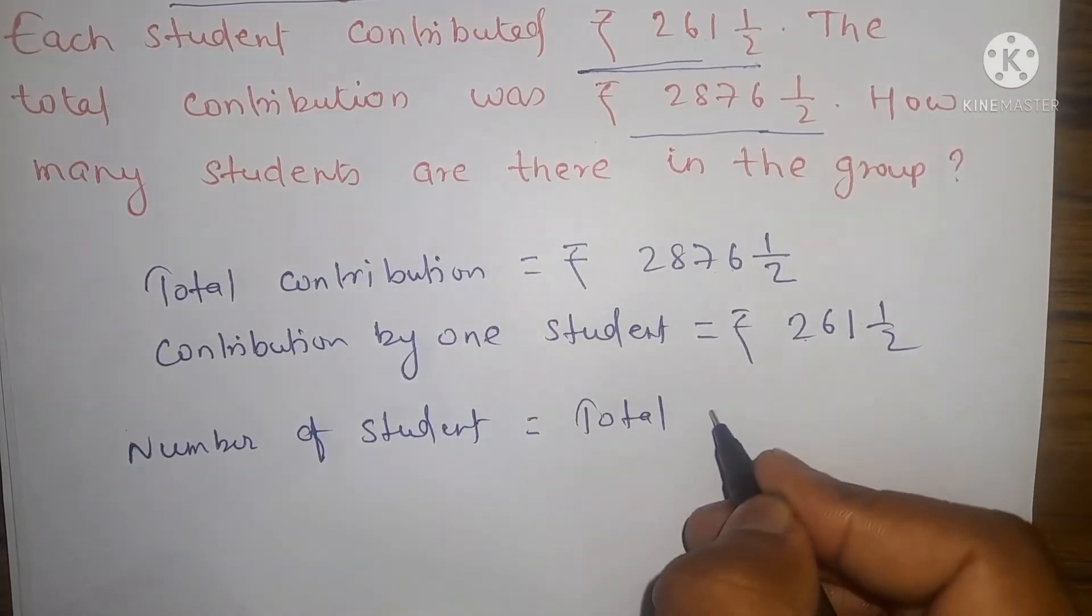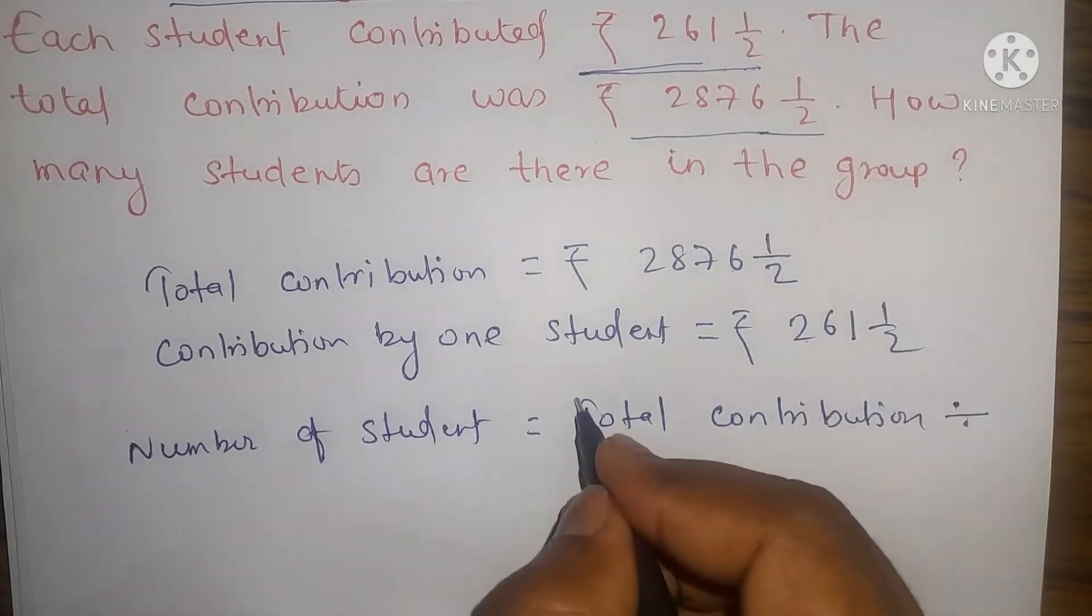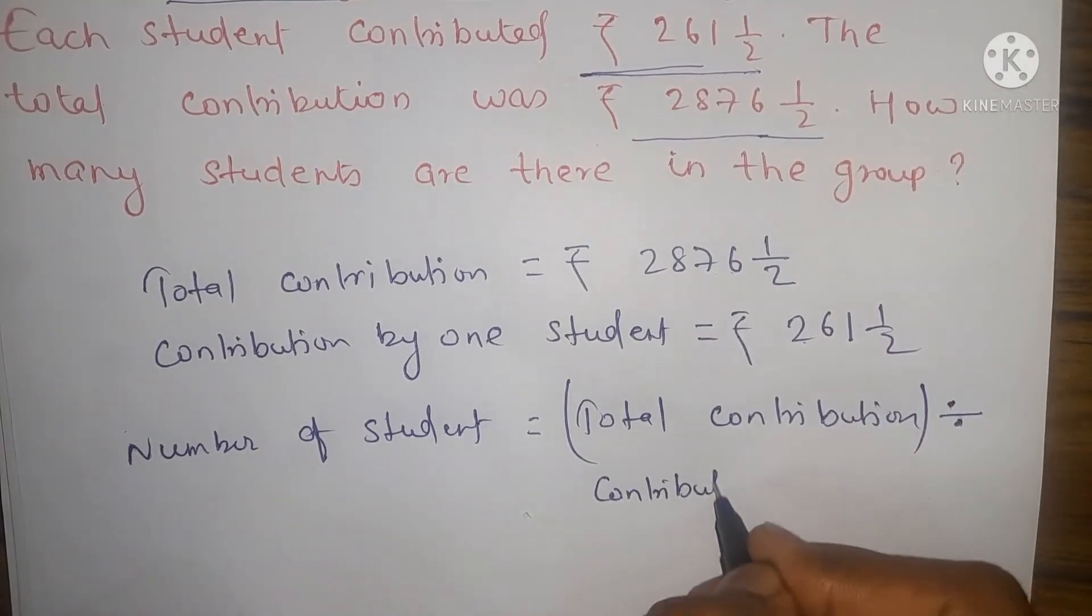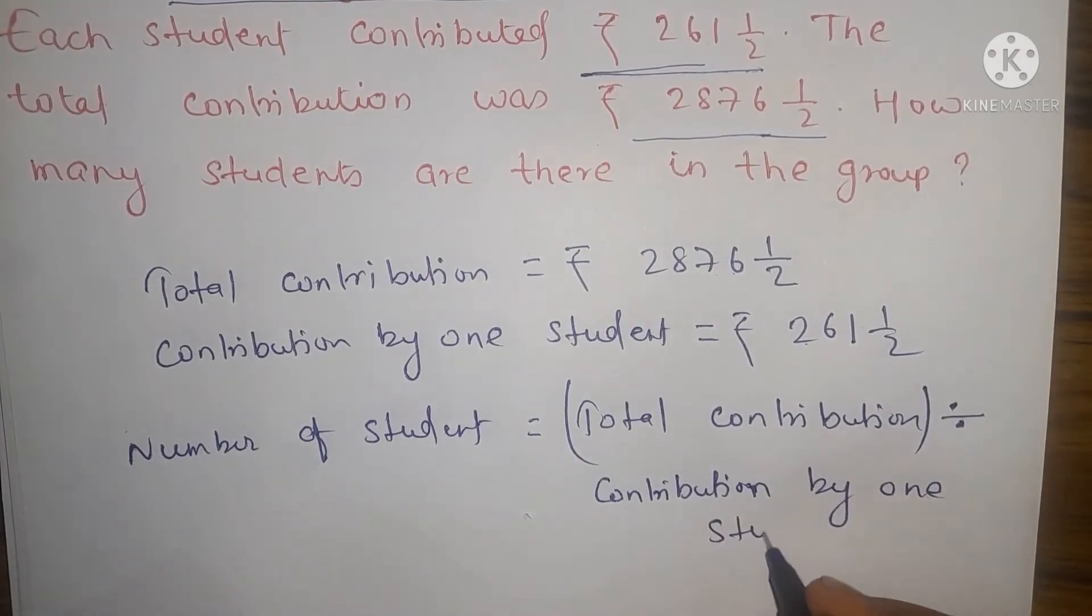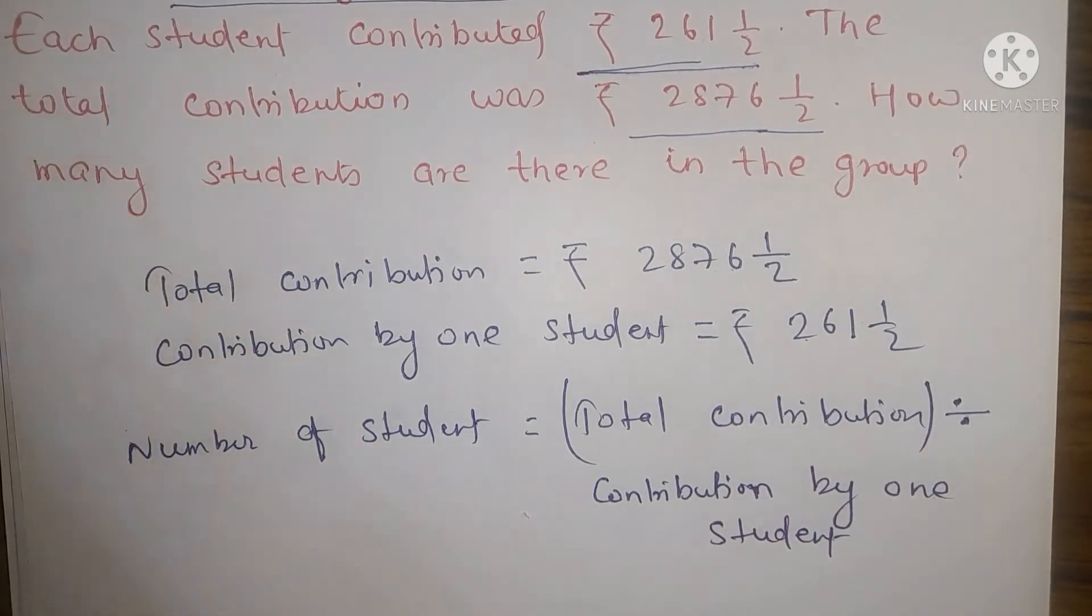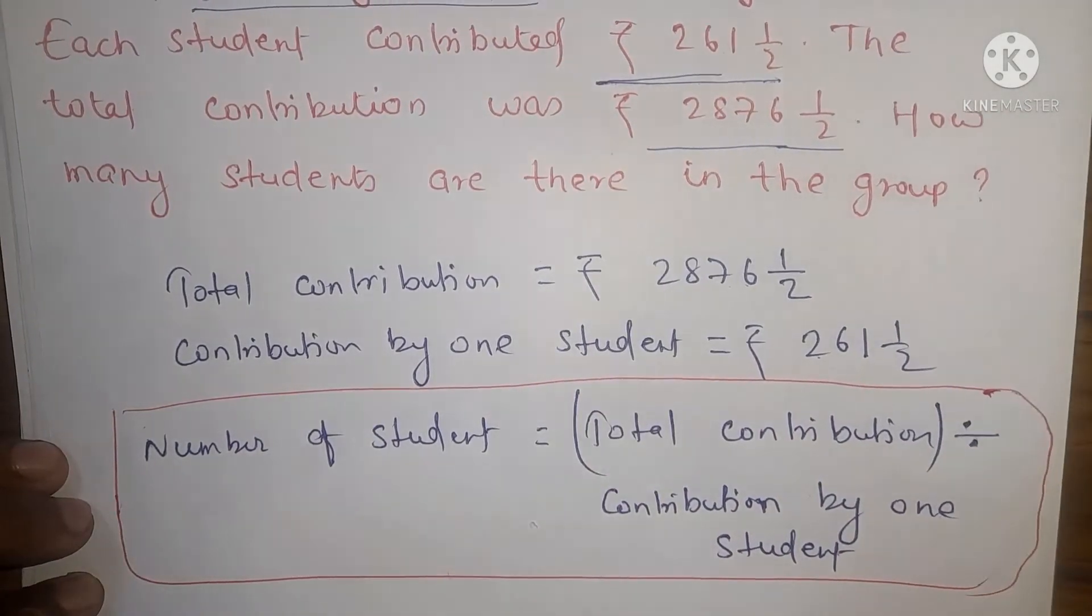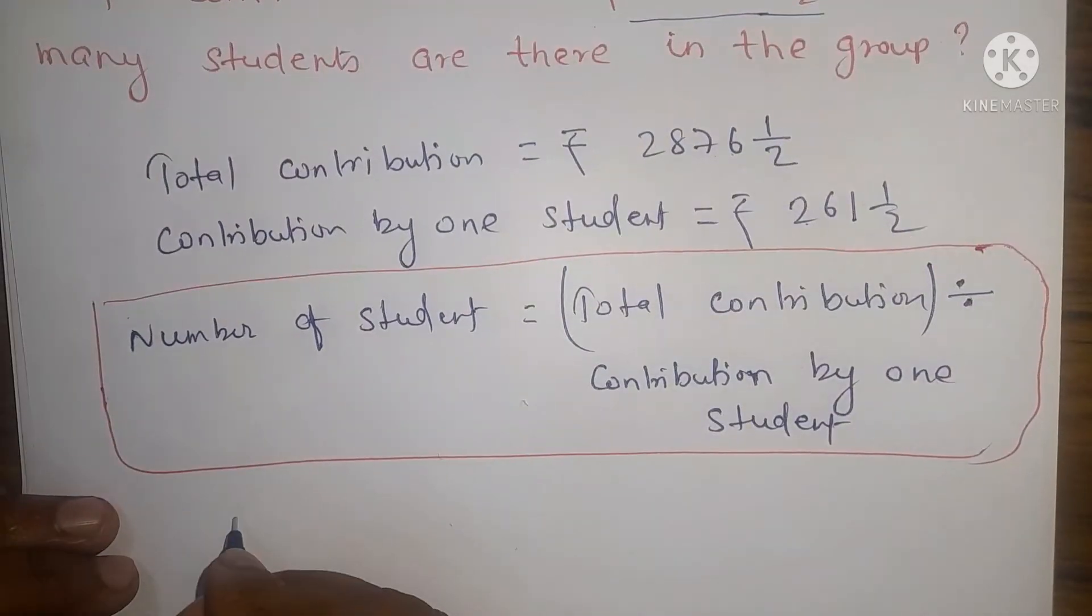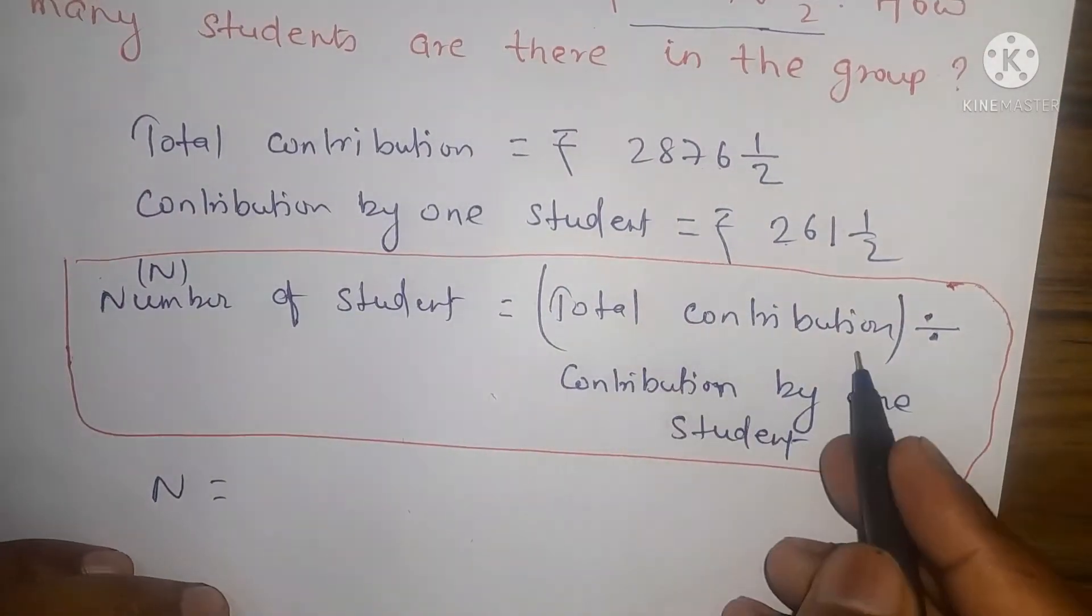Total contribution divided by contribution by one student. This is the formula - nothing complicated, just this formula. Total money divided by how much one student gave. Just divide it - very simple. If you think about it too hard it seems difficult, but apply a little mind and it's very easy. So let's write N - I'm representing it with N. N is the number of students. So what was the total contribution?